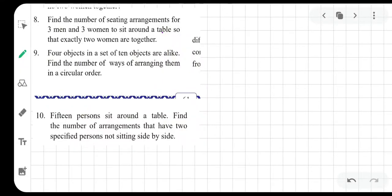Okay, so let's solve the remaining three problems. Find the number of seating arrangements for three men and three women to sit around the table so that exactly two women are together. We can reach to the same answer in various ways actually.